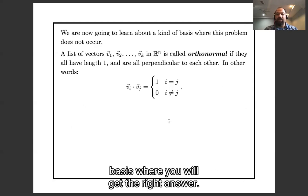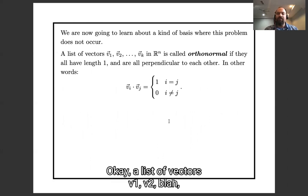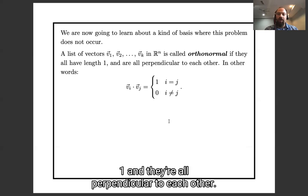And so I'm now going to tell you about a kind of basis where you will get the right answer, a kind of basis where you can compute lengths and angles when working in coordinates. A list of vectors v1, v2, ..., vk is called orthonormal if all the vectors have length 1 and they are all perpendicular to each other.